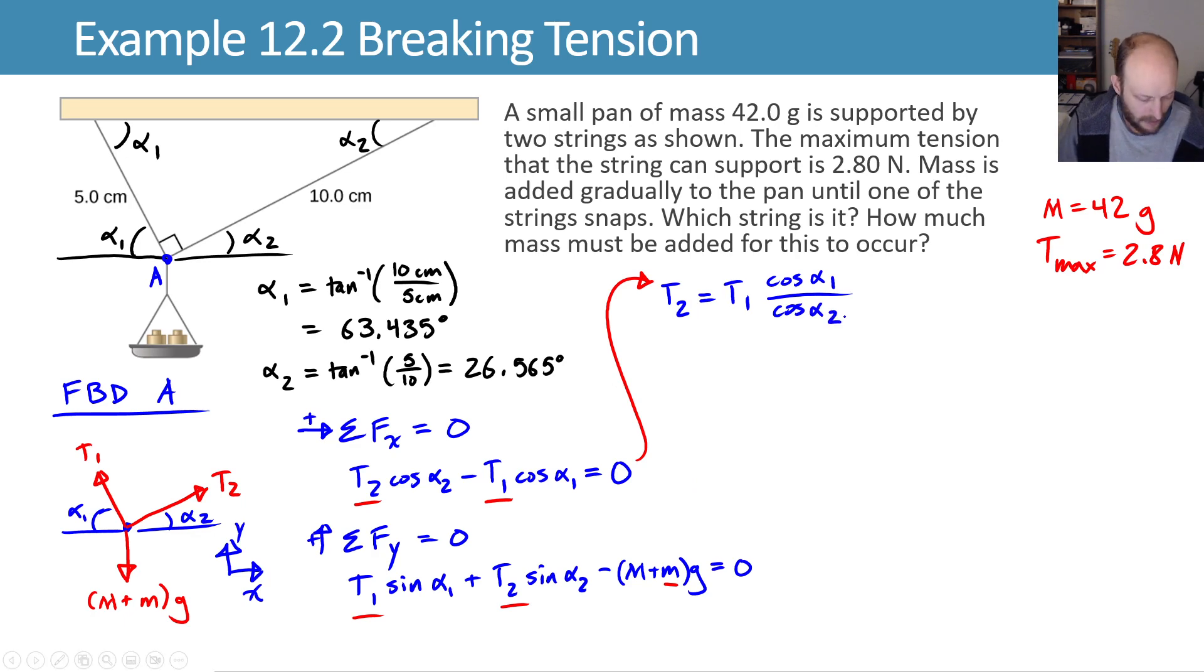Which I can plug in alpha 1 and alpha 2, and this tells me that t2 is equal to 0.5 times t1.